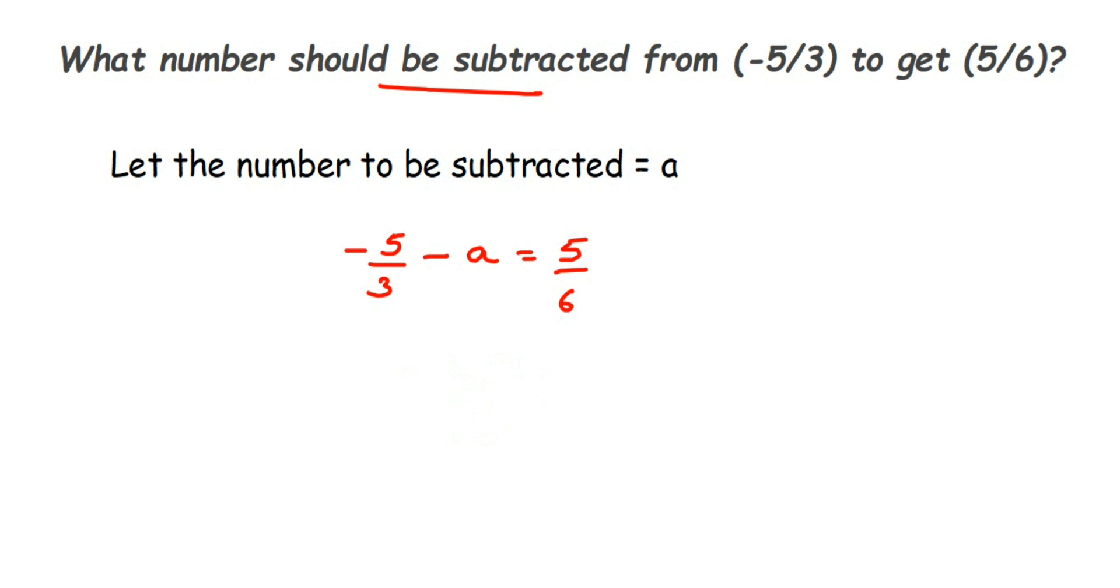Now it's like a linear equation you're solving to find the value of 'a'. I'm going to transpose this -5/3 to the other side. So it will be -a = 5/6, and when transposing, signs will change, negative will become positive, so it will be +5/3.